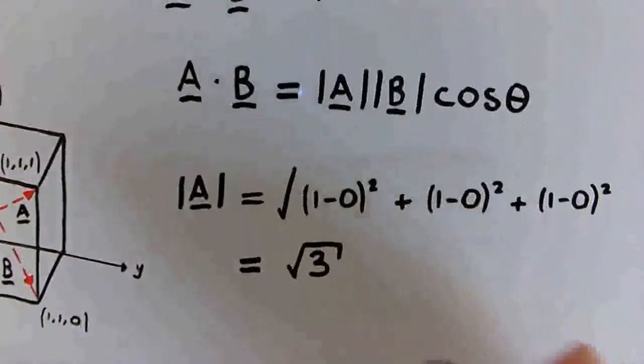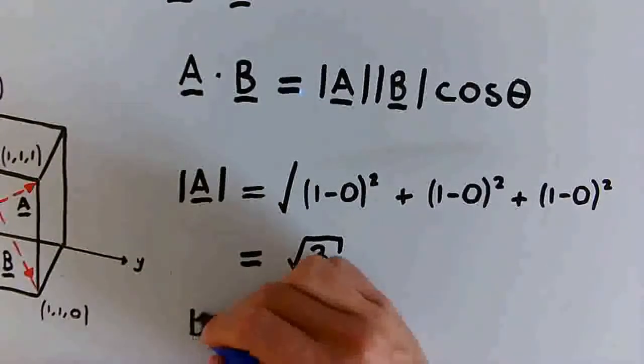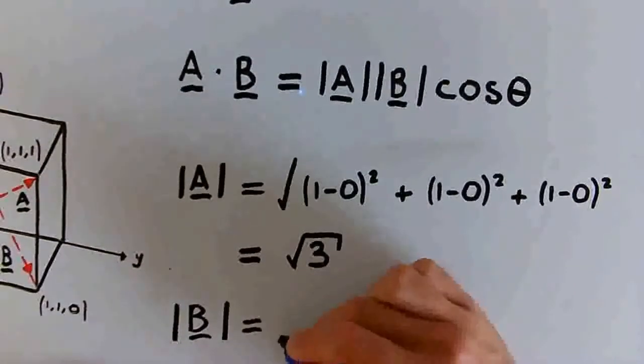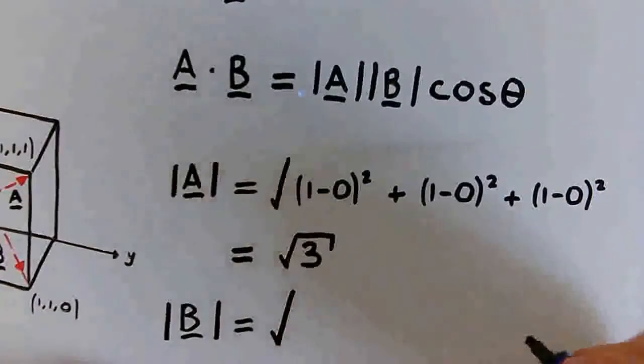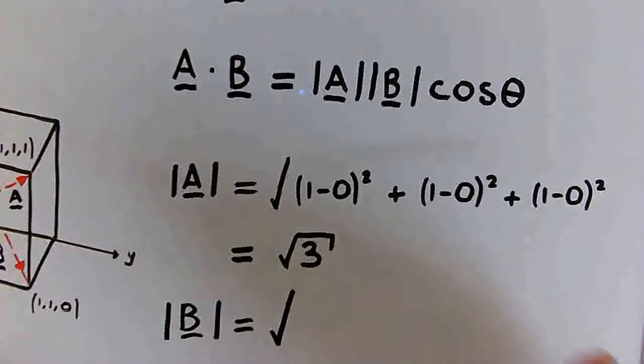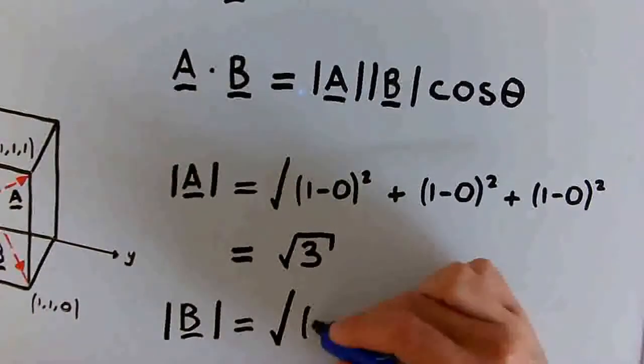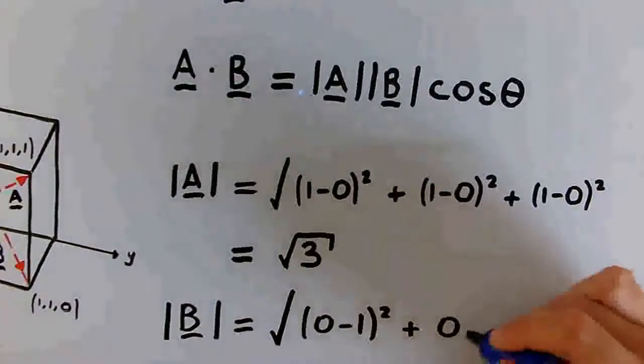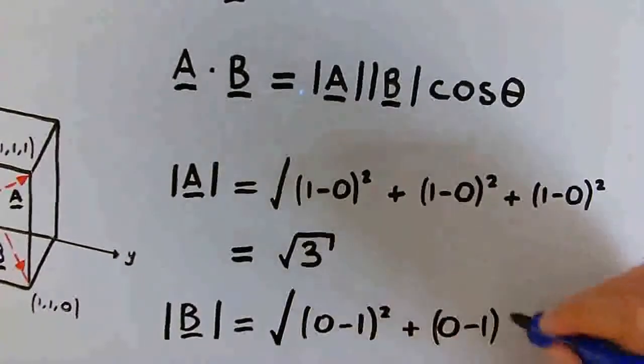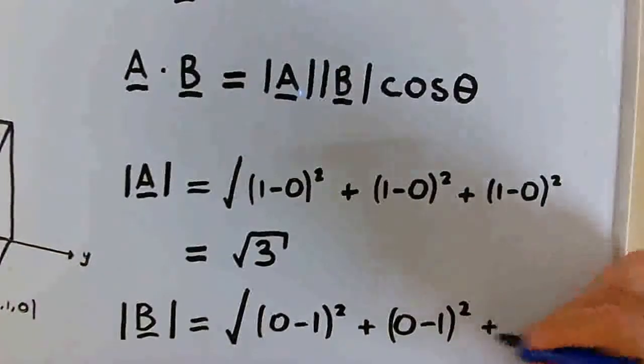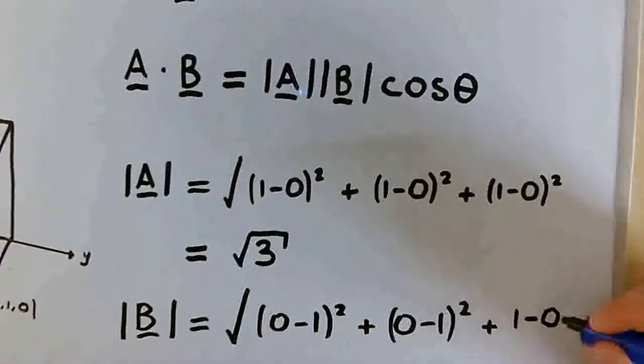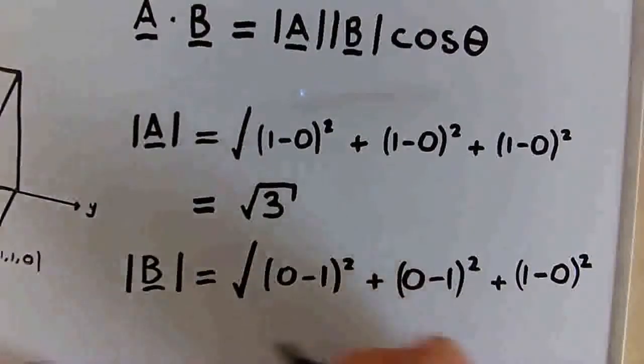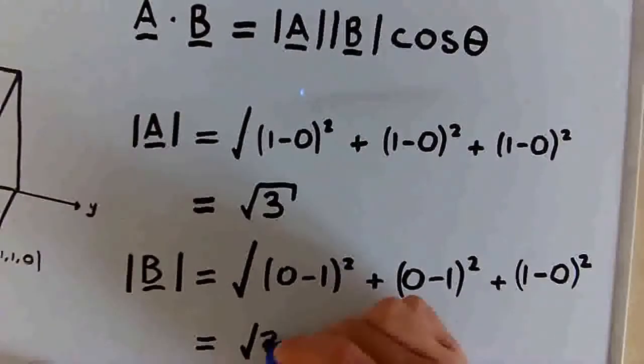Now we can work out the magnitude of vector B in a very similar way, taking the differences in the x, y, and z coordinates. So for the vector B, we have 0 minus 1 squared, plus 0 minus 1 squared, plus 1 minus 0 squared. And this is also equal to the square root of 3.